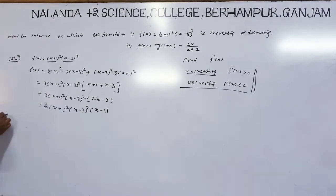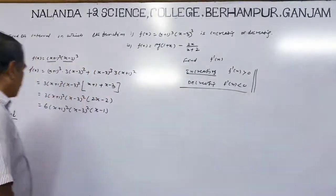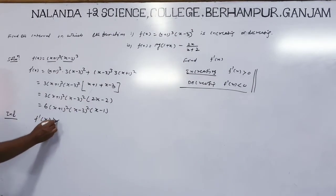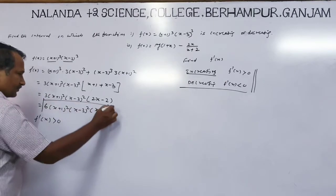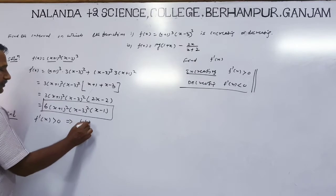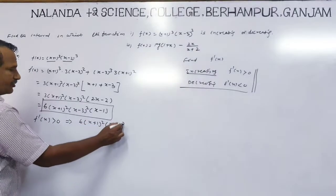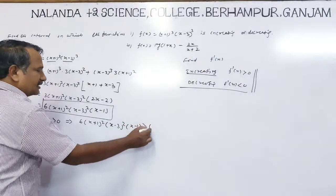For increasing function, the condition is f'(x) greater than 0. So here, 6(x+1)²(x-3)²(x-1) is greater than 0.